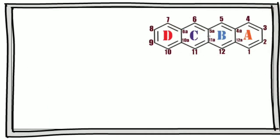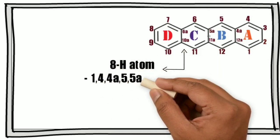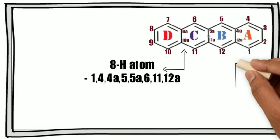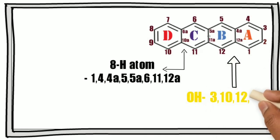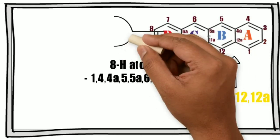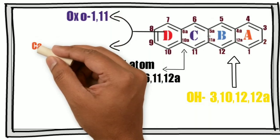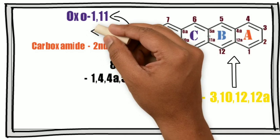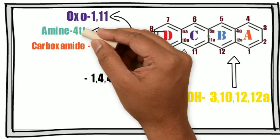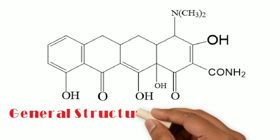Now let's see how we obtain the structure of tetracycline from the naphthacin ring. We add eight hydrogen atoms at positions 1, 4, 4a, 5, 5a, 6, 11, and 12a. Hydroxyl groups are added at positions 3, 10, 12, and 12a. The oxo group is at positions 1 and 11. The carboxamide group is at positions 1 and 2, and the amine is added only at position 4. In this way we obtain the general structure of tetracycline from the naphthacin ring by adding different substitutions.